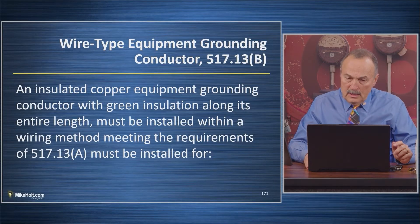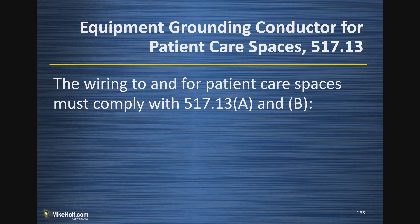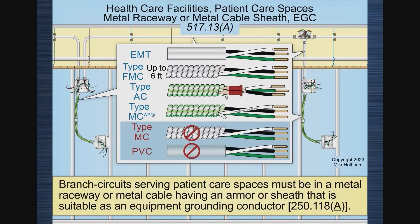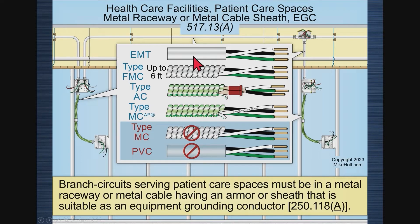Now let's get into the language. This slide says: the wiring to and for patient care spaces must comply with 517.13A — mechanical — and B — wire-type equipment grounding conductors. Section A, wiring methods: branch circuits serving patient care spaces must be in a metal raceway or a metal cable having an armor or sheath suitable as an equipment grounding conductor, which meets the requirements of 251.18.